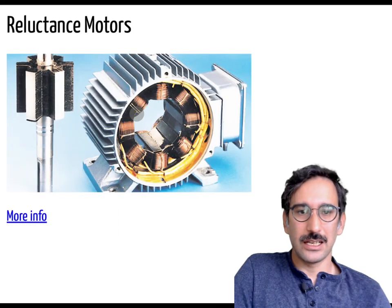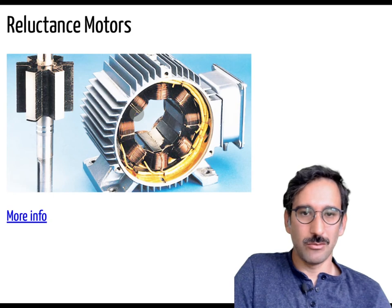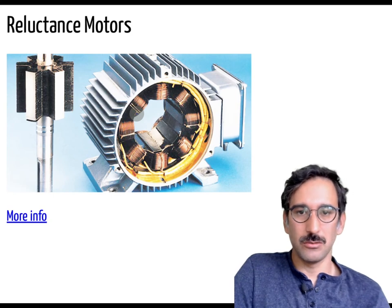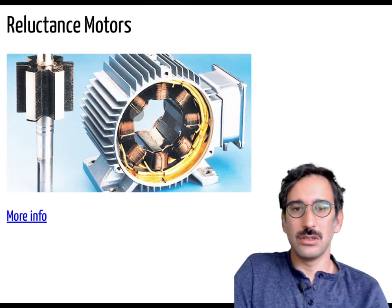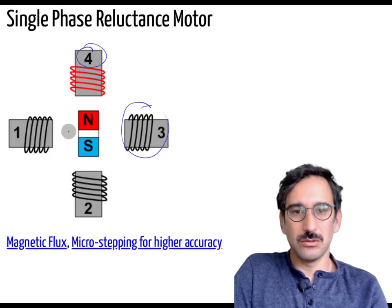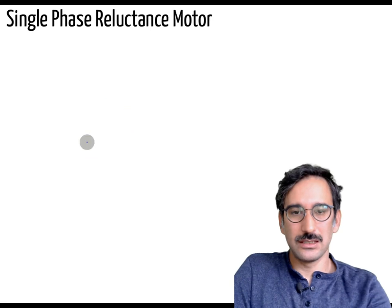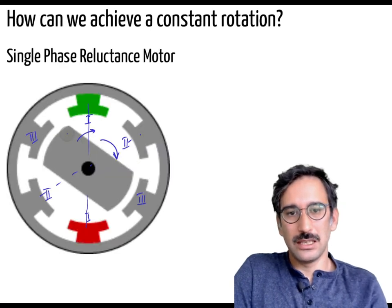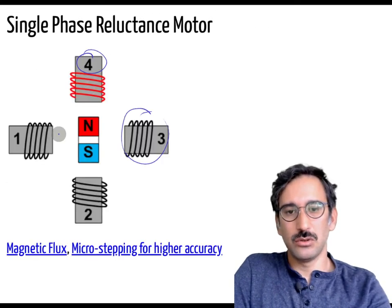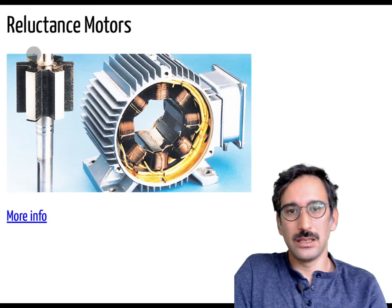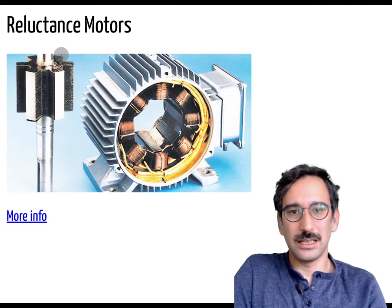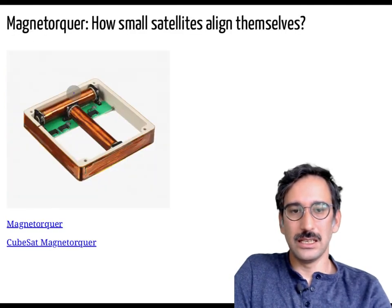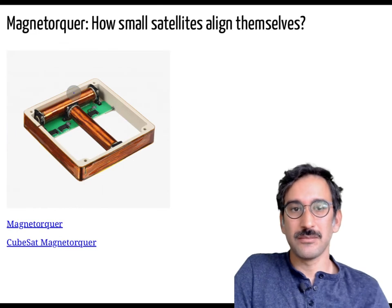There are commercial reluctance motors available. Instead of using a simple straight rotor, you can increase torque by using a multiple-saliency rotor geometry — a non-symmetrical magnetic structure — which the system tries to align with.